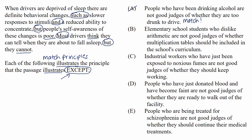Choice B: elementary school students who dislike arithmetic are not good judges of whether multiplication tables should be included in the school's curriculum. This doesn't match the principle from the passage. There's no physical condition preventing the students from making a judgment — it's just that these students are biased by their dislike of something. Since this situation's principle doesn't match the passage's principle and we're working with an except question, this is our answer. We could select it and move on on test day.